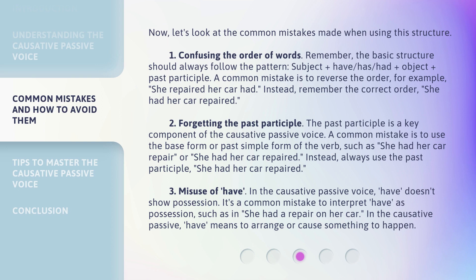Number three: misuse of 'have.' In the causative passive voice, 'have' doesn't show possession. It's a common mistake to interpret 'have' as possession, such as in 'she had a repair on her car.' In the causative passive, 'have' means to arrange or cause something to happen.